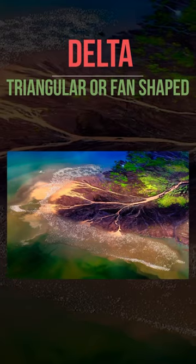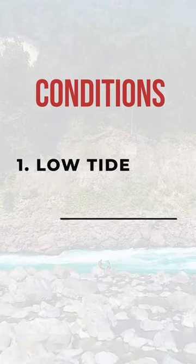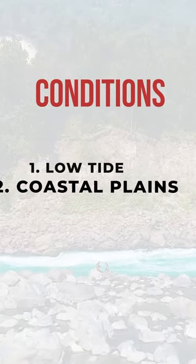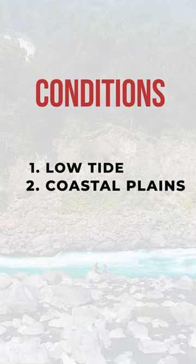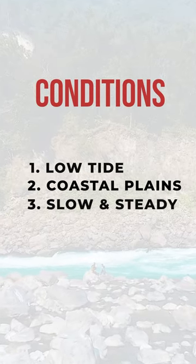Deltas are usually triangular and fan-shaped. The conditions for delta formation include low tides, coastal plains, and rivers that are slow and steady.